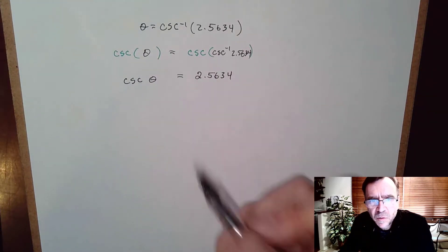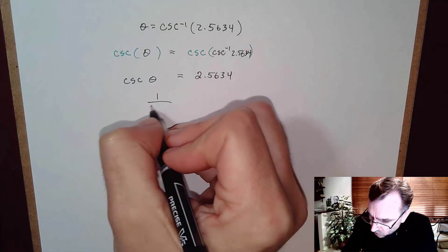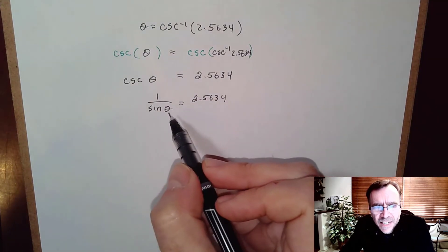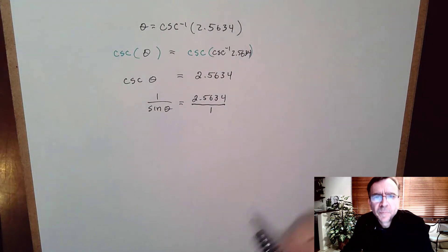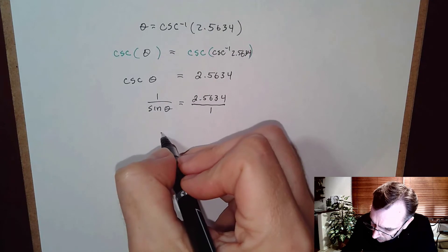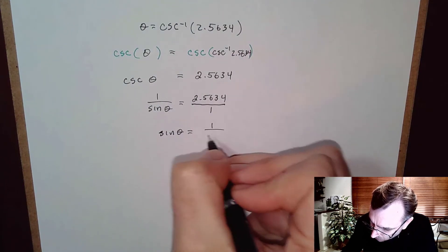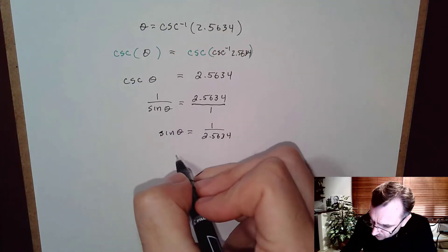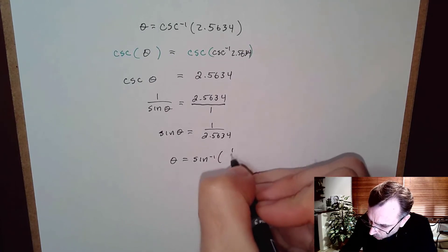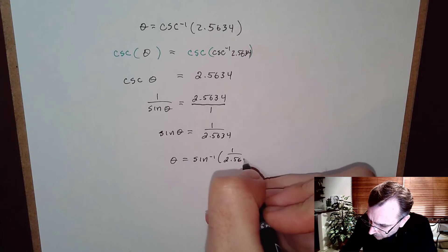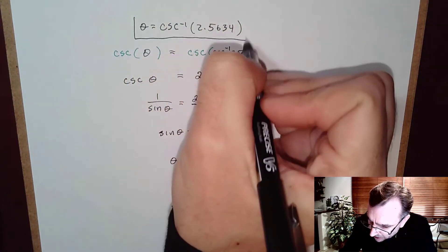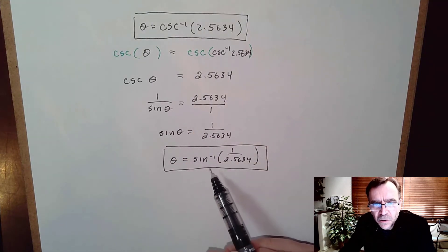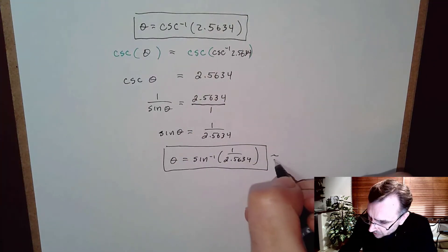Now, cosecant is 1 over sine, so 1 over sine of theta equals 2.5634. Reciprocating both sides gives sine of theta equals 1 over 2.5634. Applying sine inverse to both sides: theta equals sine inverse of 1 over 2.5634. That's the same theta we started with, and since we have a sine inverse button (not a cosecant inverse button), we can now compute this.